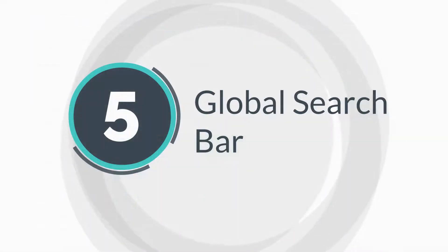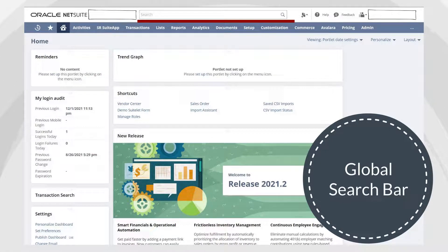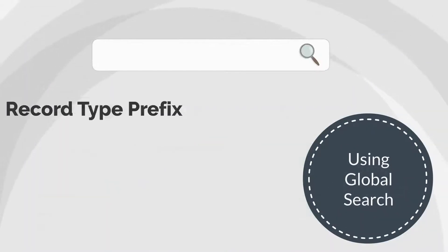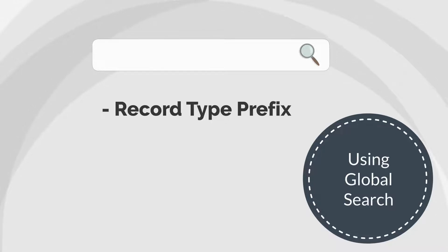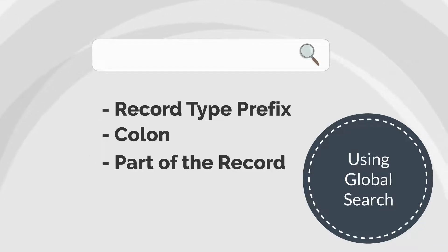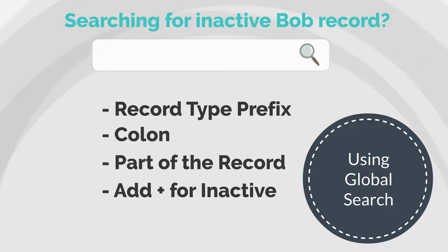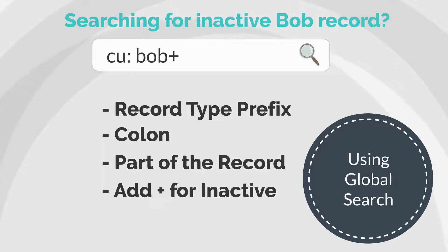Another key navigation tool in NetSuite is the Global Search Bar, located top and center of NetSuite. If you don't know where a specific record is located, you probably want to use the Global Search Bar to find it. When searching for a record, you can use a prefix like CU or CUST for customer, followed by a colon and at least part of the record you wish to find. If you need to find inactive records in addition to active ones, simply add a plus to the end of your search. For example, if you're looking for a customer named Bob but you're not sure if he's still active, searching for CU:Bob+ would pull up the desired record.